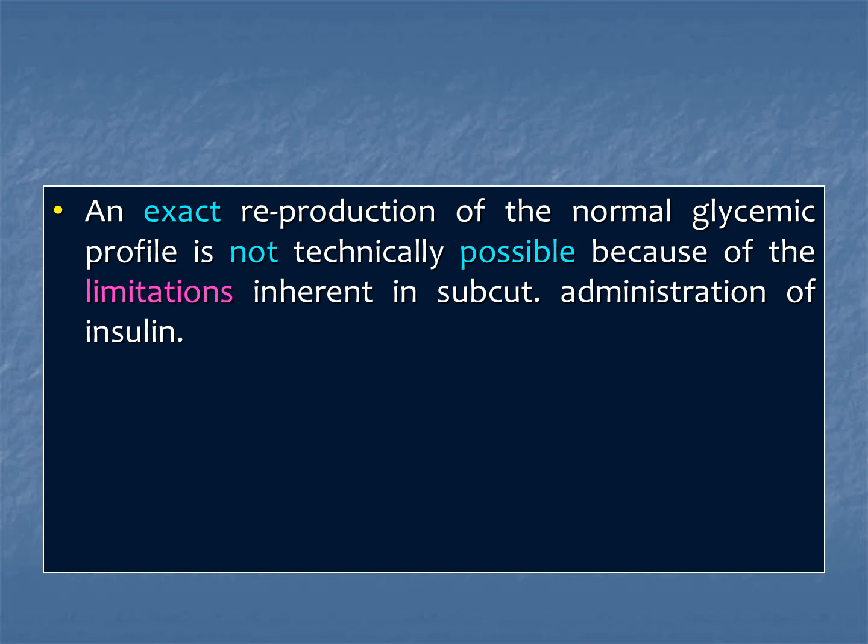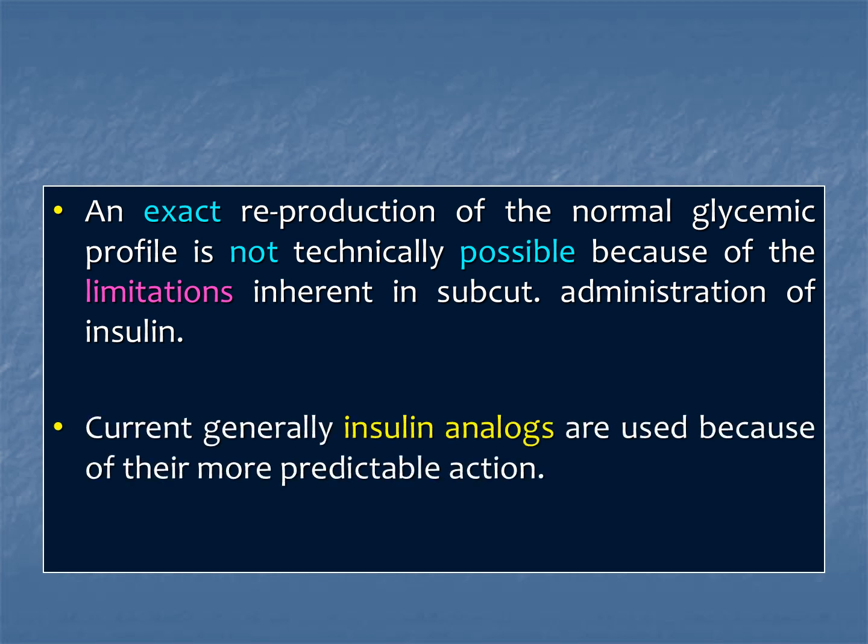The exact reproduction of the normal glycemic profile is not technically possible because of the limitations we face while administering the drug subcutaneously. However, currently we use insulin analogs because they have more practicable action, allowing us to get as near to normal physiological insulin environment as possible.